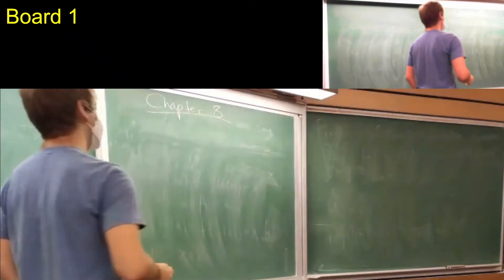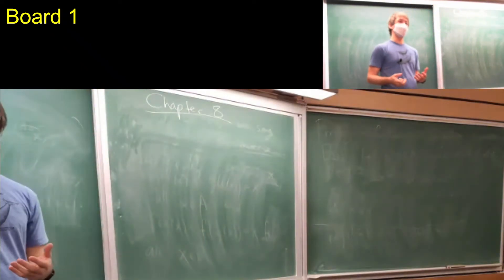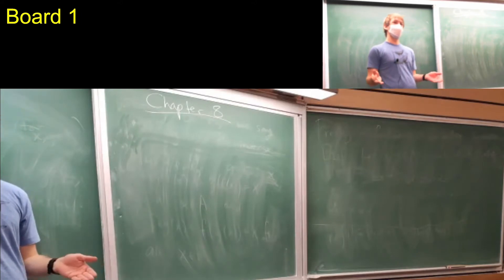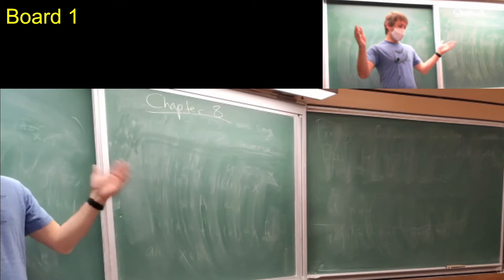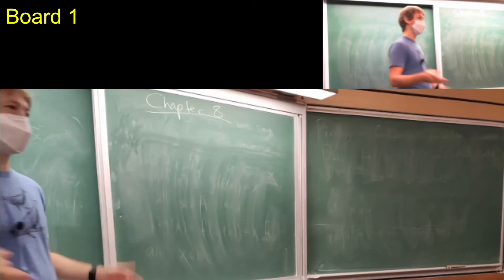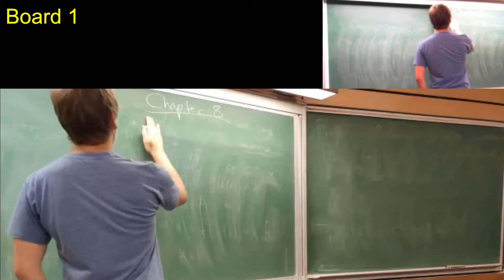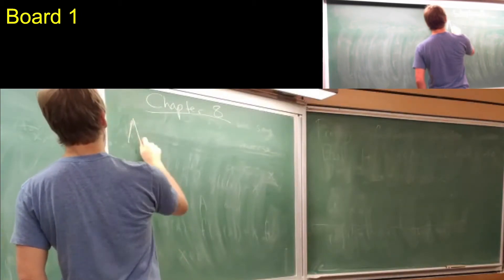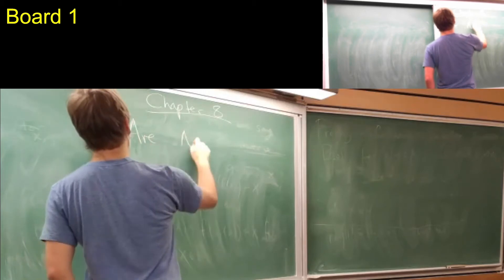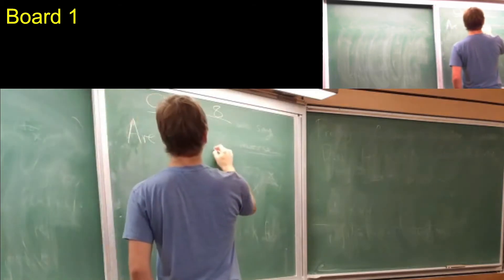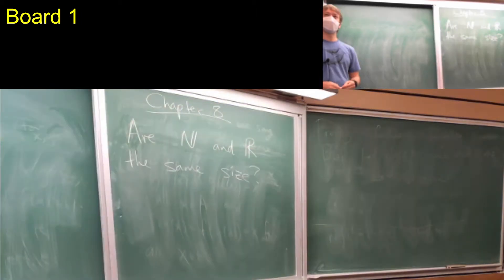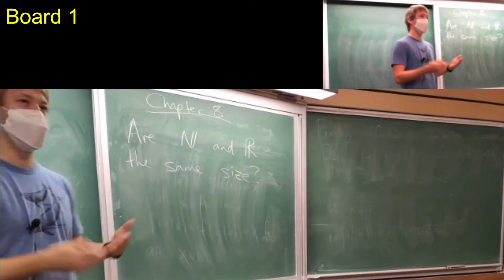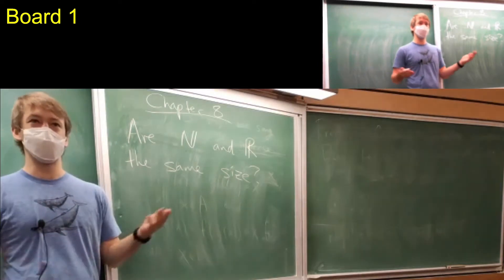So here's a question. We've talked about cardinality of sets, but usually that was involving finite sets. The cardinality of the set of numbers one up to ten is ten, right? Here's a question: is the set of natural numbers and the set of real numbers the same size? They're both infinite, so you might think infinity equals infinity, so they're the same size.